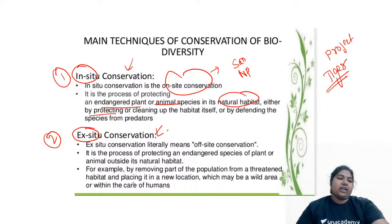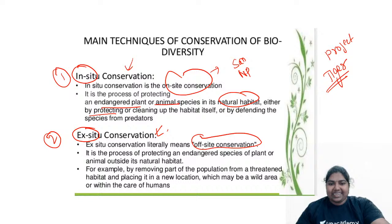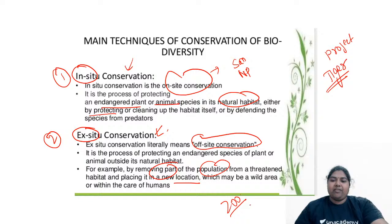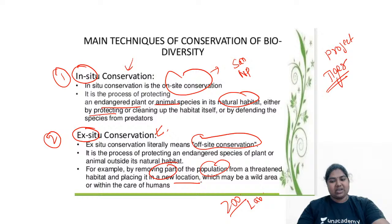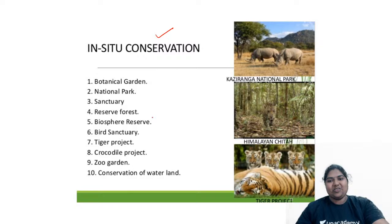The next type is ex-situ conservation. This is what you do in the lab — it is called off-site conservation. Off-site means you are taking the organism, removing it from its population, and putting it in a new location. For example, a zoo or a lab — you remove them from nature and grow them in your own area. That is ex-situ conservation.